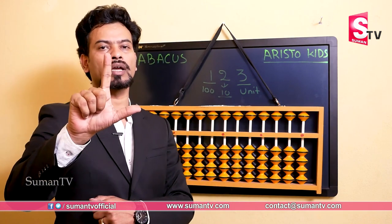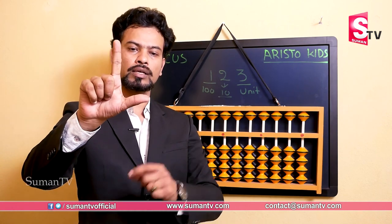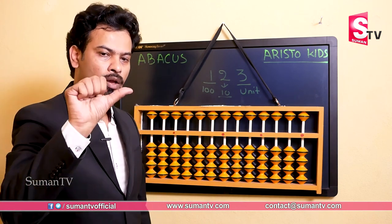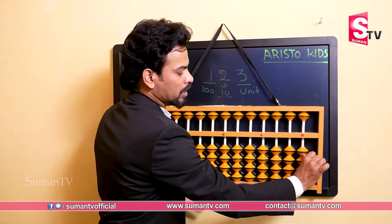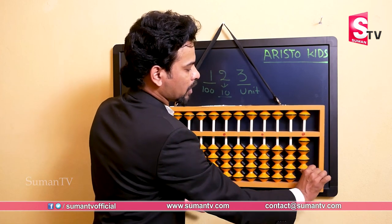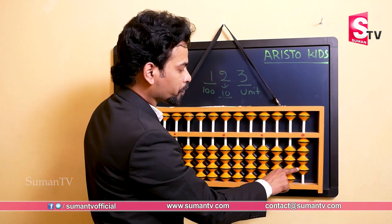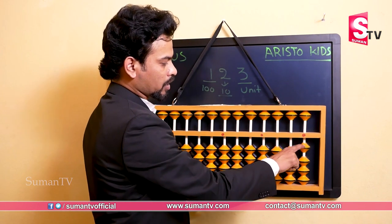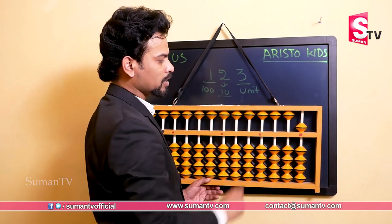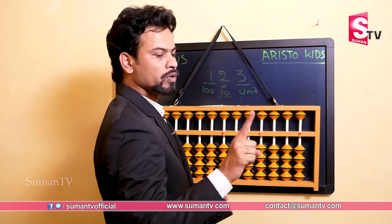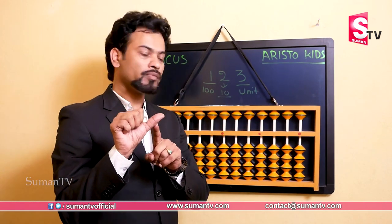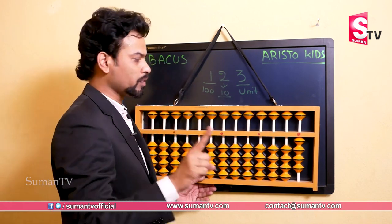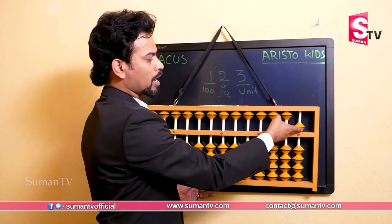We are using only two fingers, either in the right hand or the left hand — only the thumb and the index finger. We will use the thumb only to push the lower beads up. To make the lower beads go down, we use the index finger. To make the upper bead go down, we also use the index finger, and to make the upper bead go up, we also use the index finger. So the thumb's job is only to push lower beads up; everything else is done with the index finger.